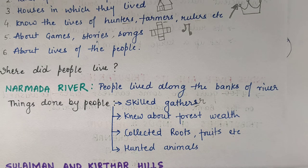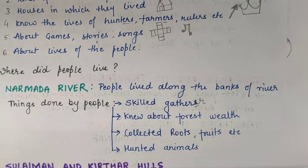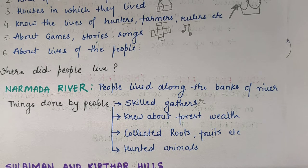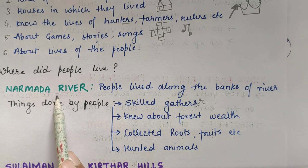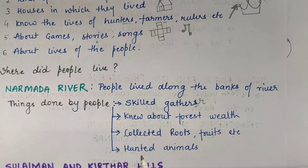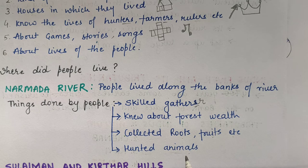Whatever the forest gave them, they were collecting it — like fruits, vegetables, honey, wood, and many more things. And people living near the Narmada river were also doing hunting and gathering — like they hunted animals also, so they were also a kind of hunter.